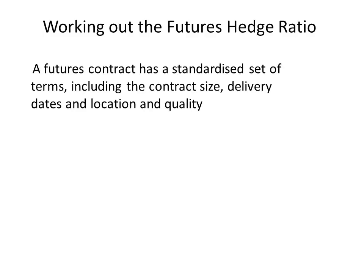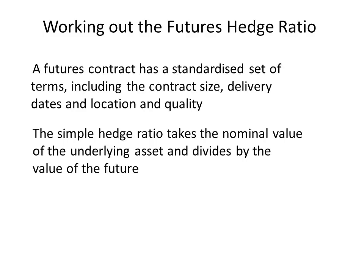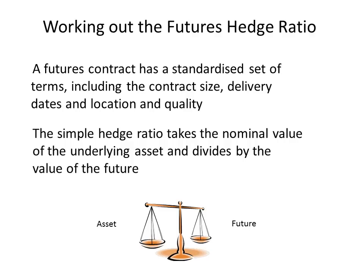Futures contracts often allow the seller to decide when in a particular delivery month they choose to deliver, whether it's the first business day of the month or the last. When working out the number of futures contracts required to hedge a particular underlying asset, we need to determine the nominal value of the underlying asset exposure and then divide that by the set value of one futures contract. Hedging is a balancing act — we need to determine how many futures to buy or sell in order to hedge a specific underlying asset risk.